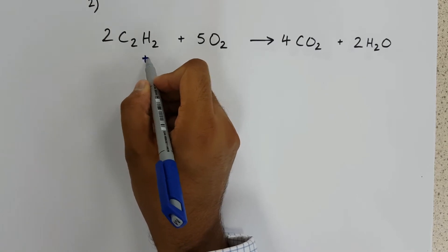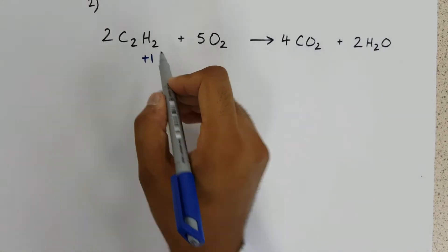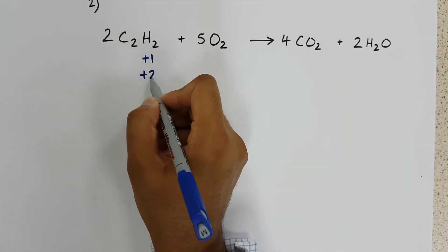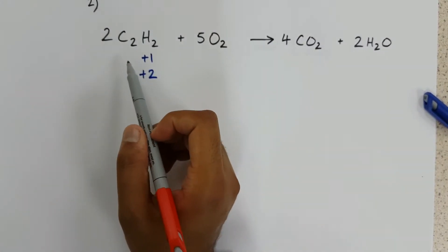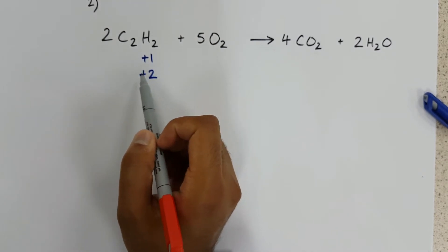Hydrogen tends to be plus one. There are two hydrogens, so overall plus two. That means our carbon, which normally is in group four, we'd expect it to be plus four. But in this situation...